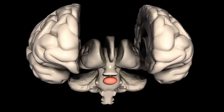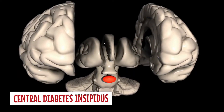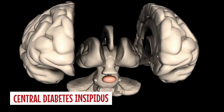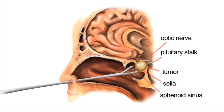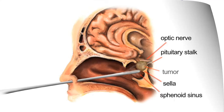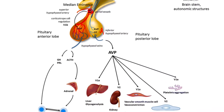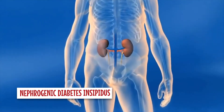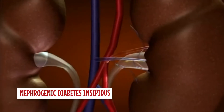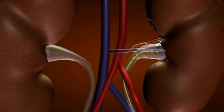It has two major forms. Number one is central, caused by the pituitary or neurohypophysis, also known as neurogenic. It is characterized by decreased secretion of antidiuretic hormone, also referred to as arginine vasopressin or AVP. Number two is nephrogenic diabetes insipidus, characterized by decreased ability to concentrate urine because of resistance to ADH action in the kidney.